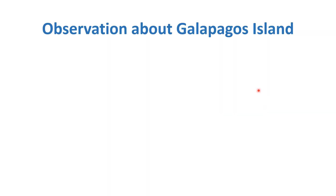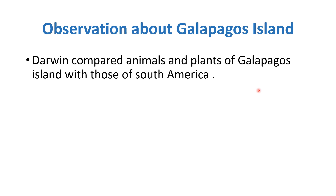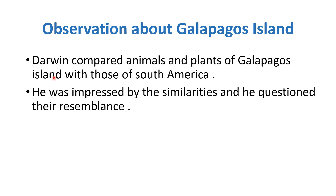It's time to discuss the observations about Galapagos Islands. Darwin compared animals and plants of Galapagos Islands with those of South America. He was impressed by the similarities and questioned their resemblance. Although the flora and fauna are different from European flora and fauna, the Galapagos Islands and South America share a lot of similarities, and Darwin questioned these similarities.